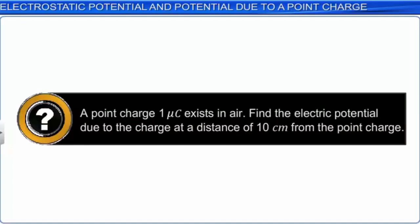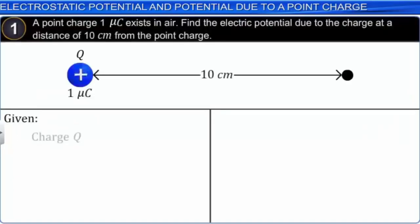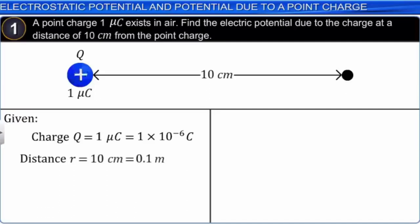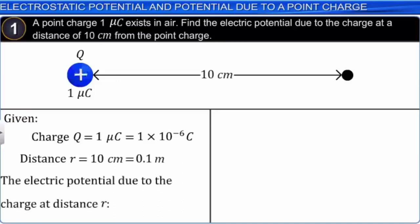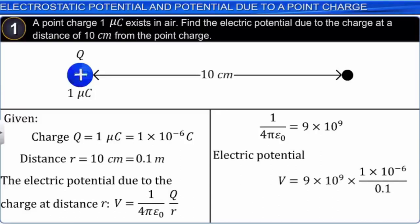Given: Q equals 1 microcoulomb equals 1 times 10 to the power minus 6 coulomb; r equals 10 centimeter equals 0.1 meter. Using V equals 1 by 4 pi epsilon naught times Q by r, and 1 by 4 pi epsilon naught equals 9 times 10 to the power 9, substituting the values: the electric potential V equals 9 times 10 to the power 4 volts.